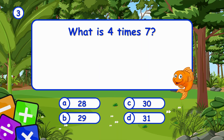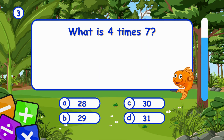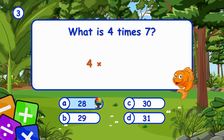What is four times seven? It's A, 28. Four times seven is 28.